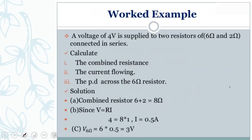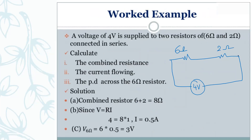Here we have an example circuit with two resistances: one is six ohms and the other is two ohms. They are connected with a voltage of four volts. The circuit has a battery of four volts and resistances of six ohms and two ohms. We want to find the combined or effective resistance.